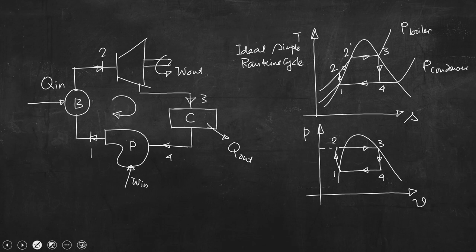What we discussed in the last class is that if we compare this T-S diagram with the T-S diagram for the ideal Carnot cycle, the segment 2 to 2-prime is an additional part. The total heat addition occurs at constant pressure, that is at boiler pressure. This segment 2 to 2-prime, which is the sensible heat transfer, is the additional feature we can see in the T-S diagram of the Rankine cycle.